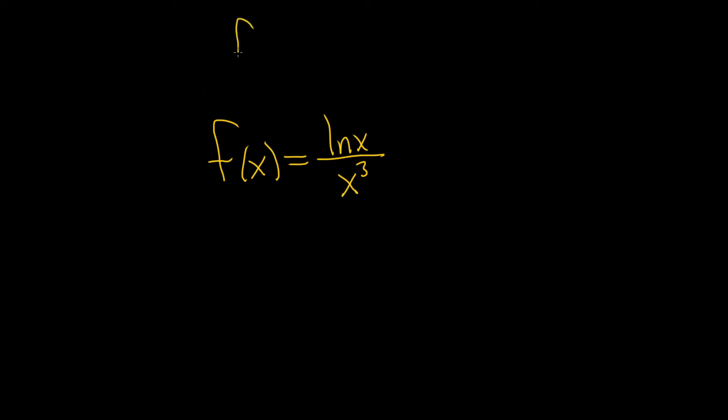So the quotient rule says if you have two functions, say f and g, and you're taking the derivative of the quotient, so you're dividing them.